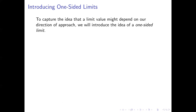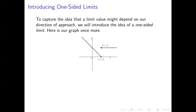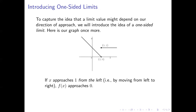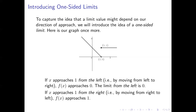That brings us to the idea of one-sided limits, which allows us to talk about situations where the limit value depends on our direction of approach. Looking at the graph of our function, if x approaches one from the left — starting from the left of that point and moving right — our function values approach zero, so the limit from the left as x approaches one is zero. On the other hand, if we're approaching one from the right, starting to the right of x equals one and working left, our function values are approaching one — in fact they're constantly one — so the limit from the right as x approaches one is one.